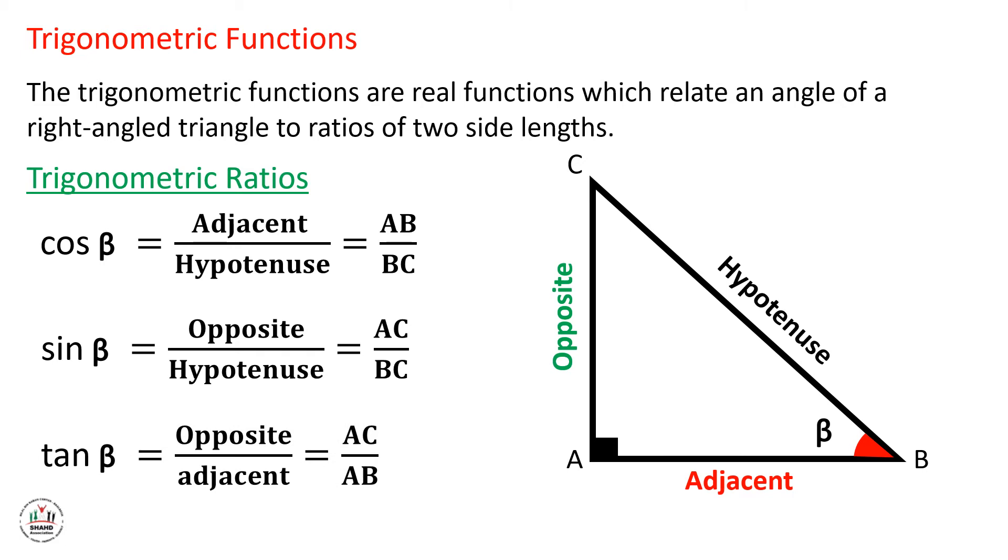And tan beta is equal to opposite over adjacent, which is equal to AC, the opposite side for angle beta, over the adjacent which is AB. And this side is an adjacent side for angle beta. The hypotenuse is not included in this formula. So you can use this formula if you have tan beta and you don't have the length of side BC or the length of hypotenuse side.